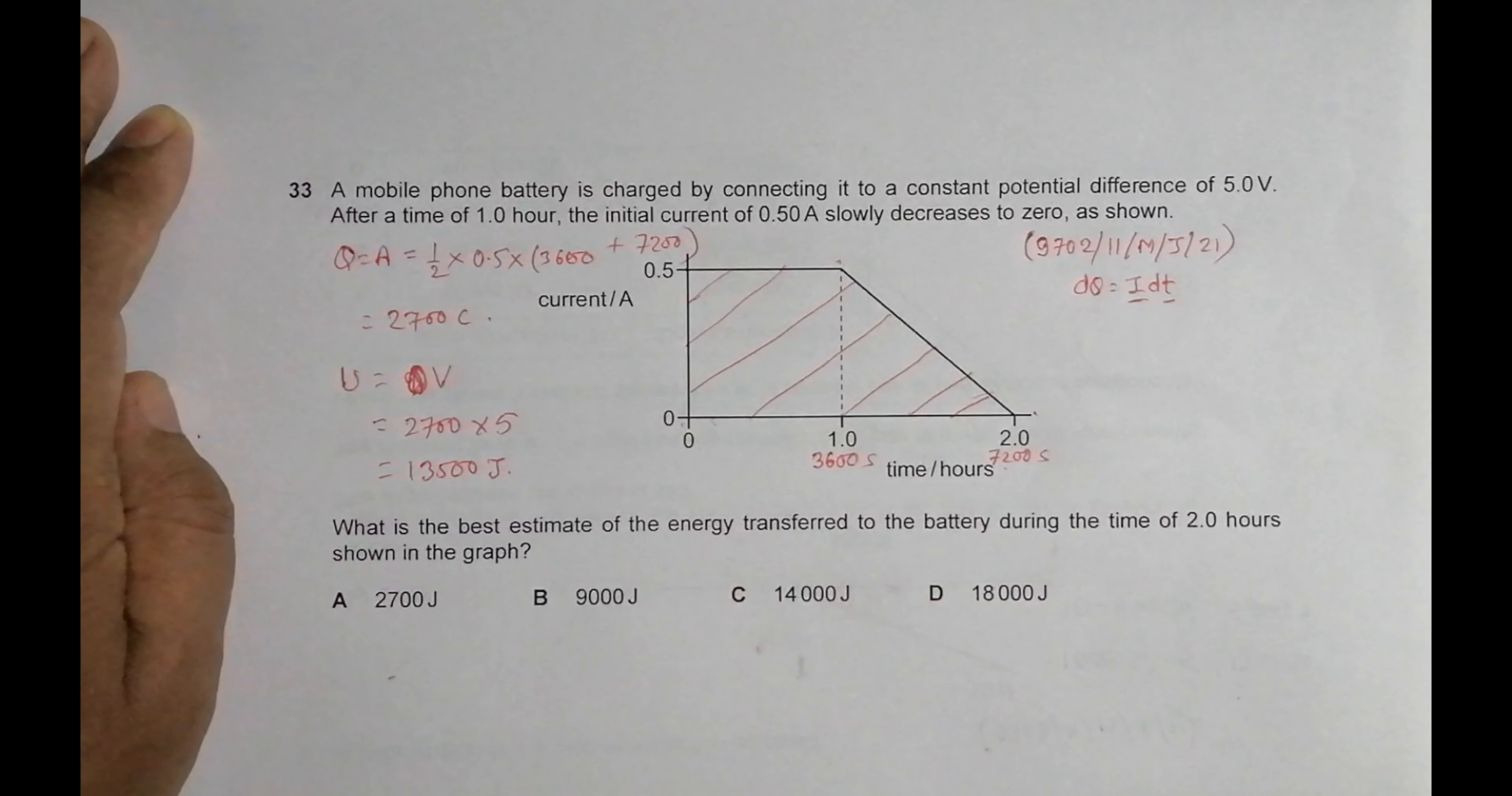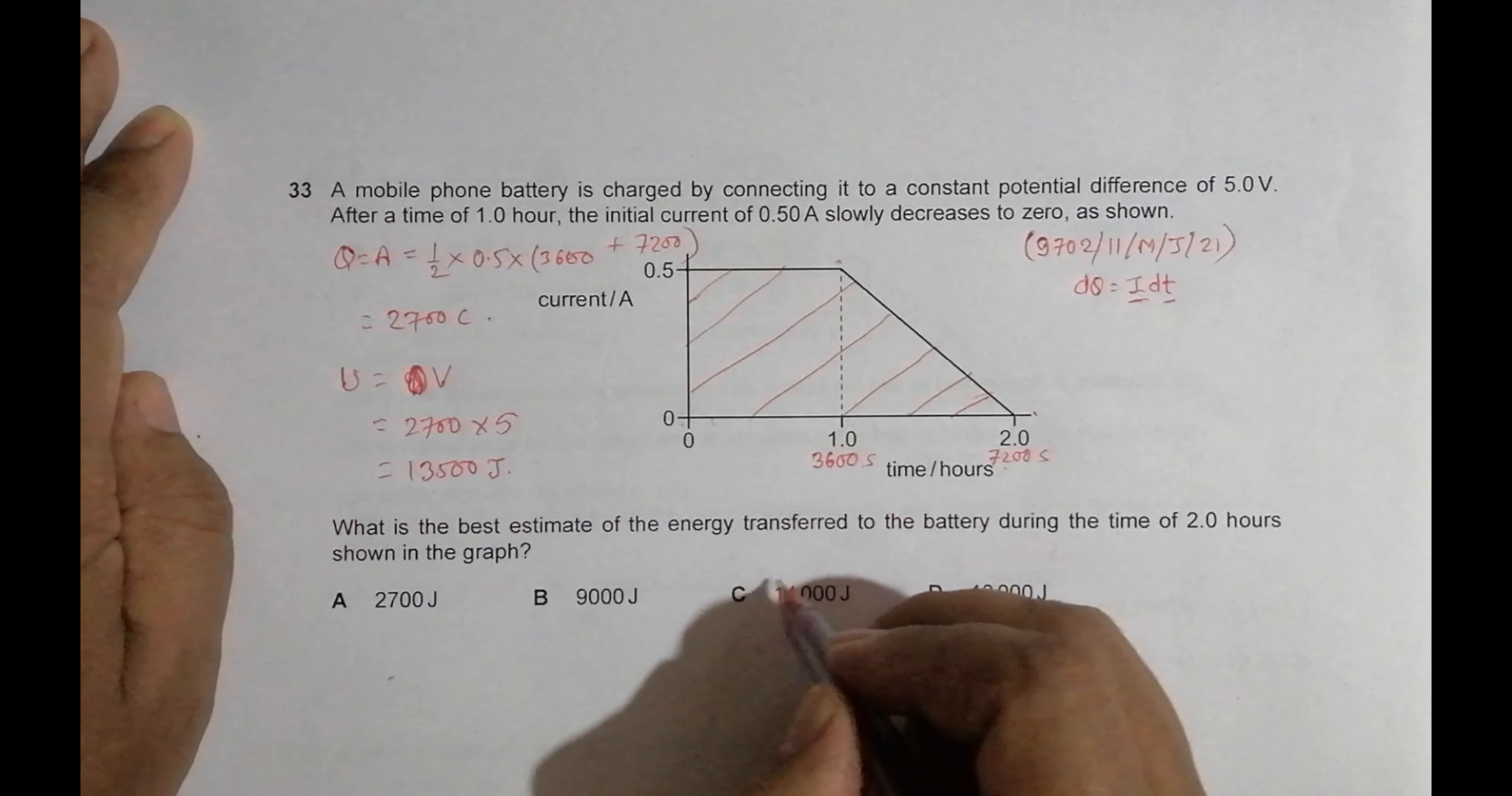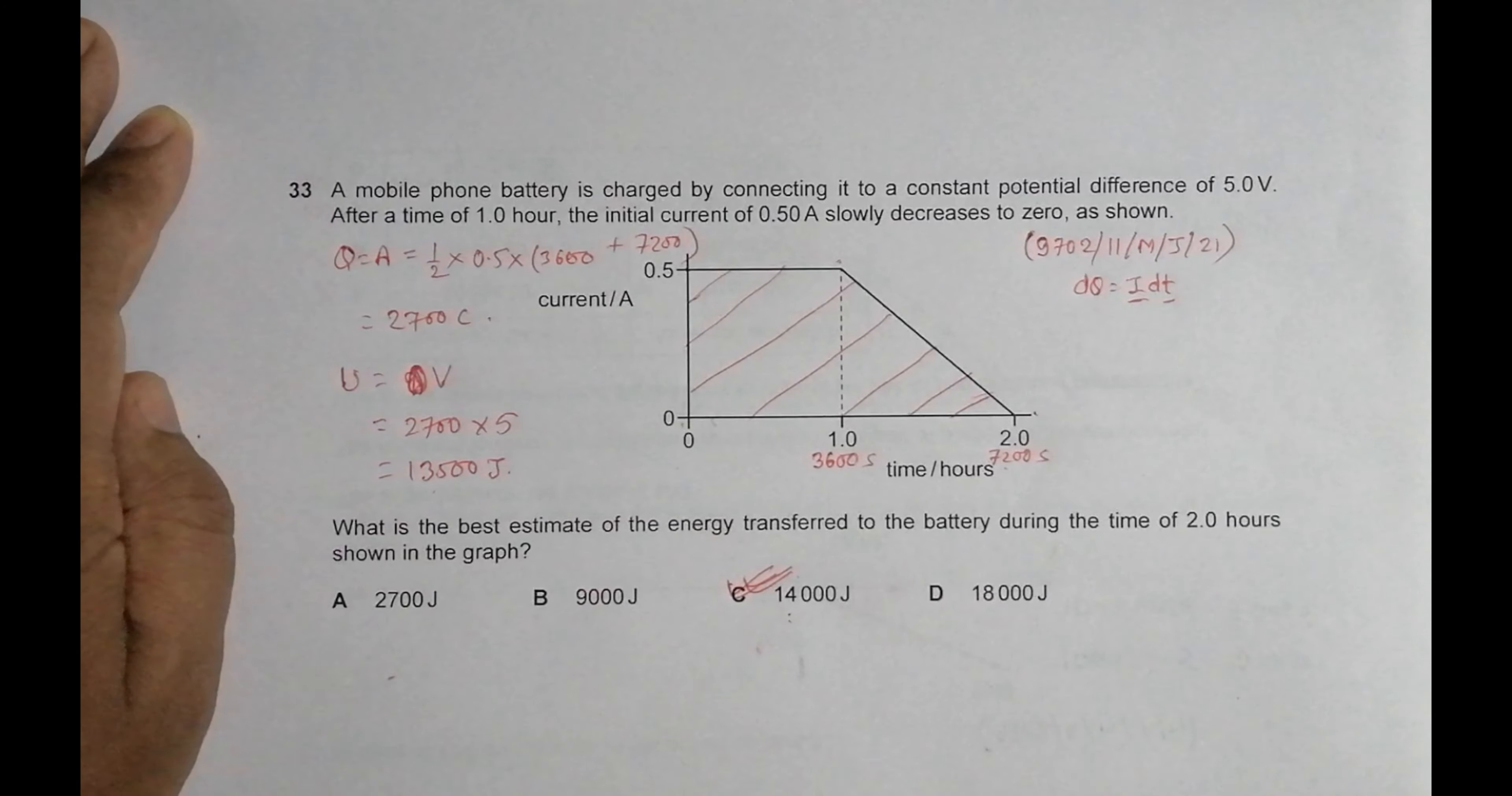It is being done in two significant figures. We have three significant figures here; when converted to two significant figures, it should equal 14. So the answer is 14,000 joules.